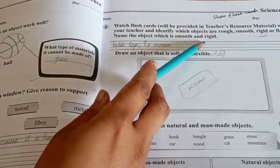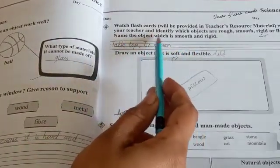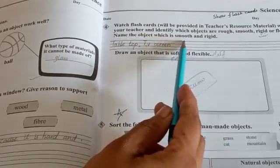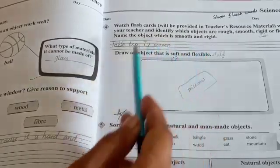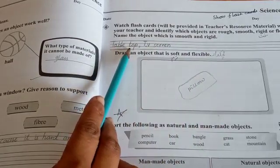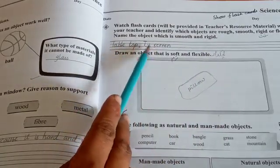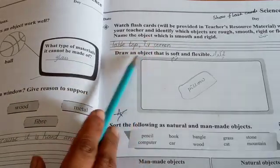Name the object which is smooth and rigid. The object's name is smooth and rigid, like a tabletop. Tabletop and TV screen are smooth and rigid.